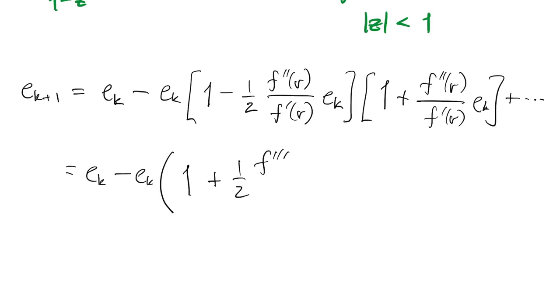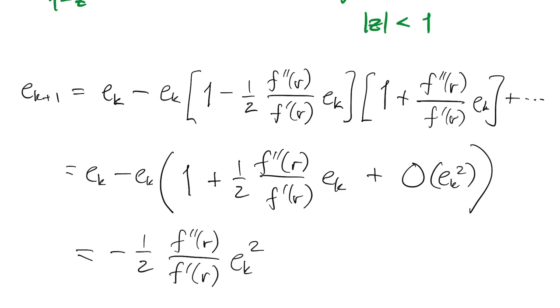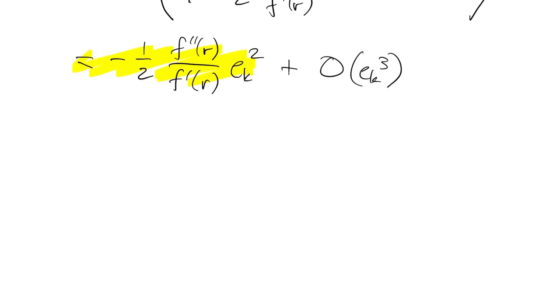And now we acknowledge that everything that we've ignored is of order ek squared or higher inside the parentheses. So the first two terms on this expression cancel out.